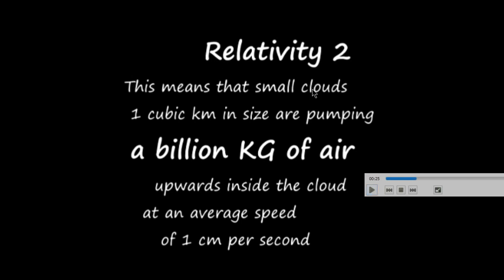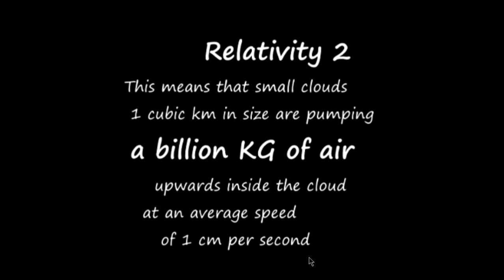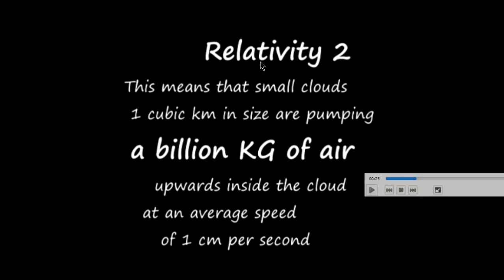A small cloud, a cubic kilometer in size, is pumping a billion kilos of air upwards inside the cloud at an average speed of a centimeter per second. And that pumping actually extends below and above the cloud, so the cloud is doing quite a lot more pumping than just what's inside it.